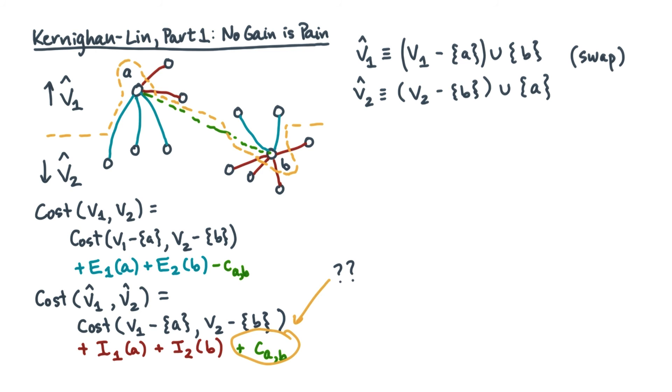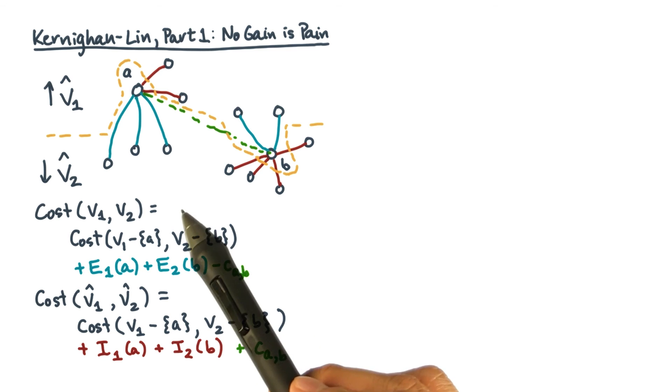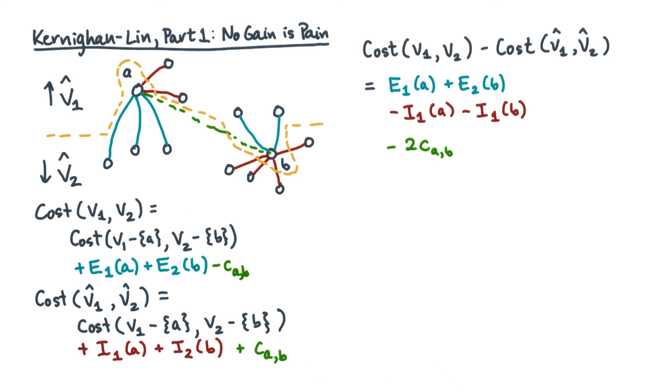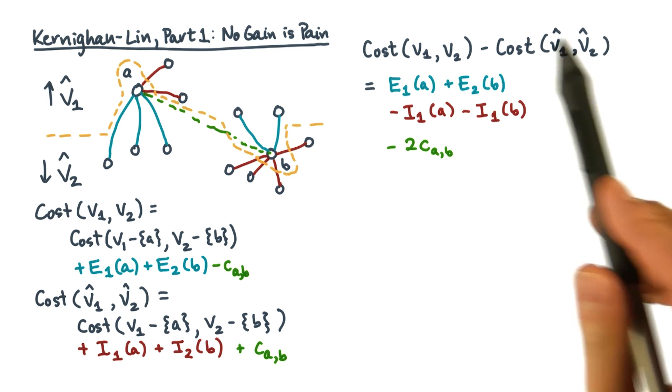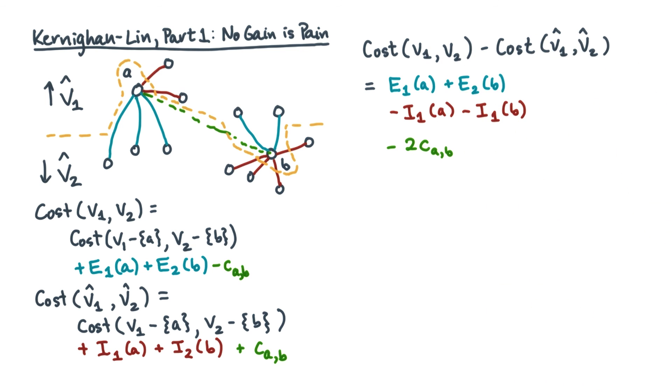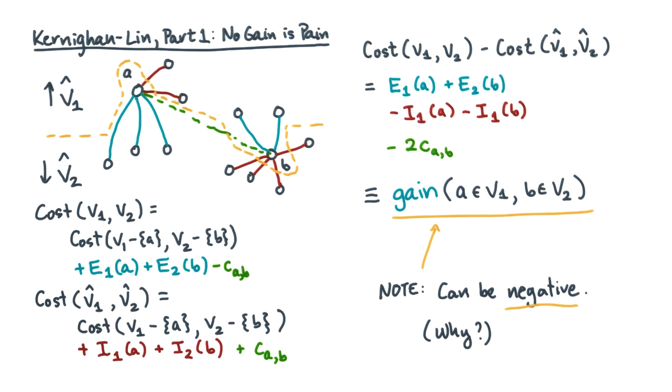Now let's look at the change in cost. That's the old cost minus the new cost. After some algebra, you get this. The larger this change, the better, because it means a larger decrease in the cost. Let's call this cost the gain from swapping A and B. By the way, do you see that it's possible that gain of AB could actually be negative?